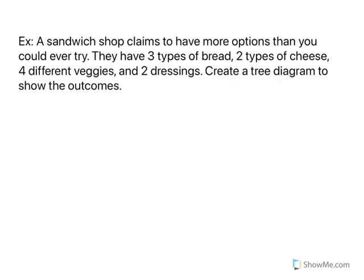First, a sandwich shop claims to have more options than you could ever try. They have three types of bread, two types of cheese, four different veggies, and two dressings. We're going to assume you can only have one of each, and we're going to start by creating a tree diagram.